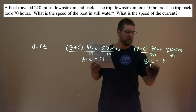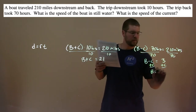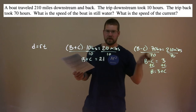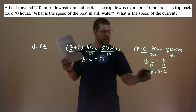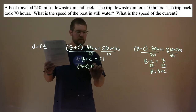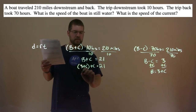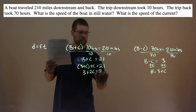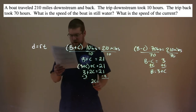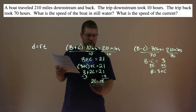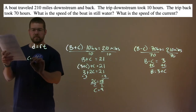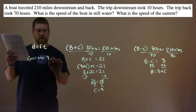B plus C is 21, and B minus C is 3 — makes it pretty simple. Get B by itself: add C to both sides, and B equals 3 plus C. Take that value for B and plug it in: 3 plus C plus C equals 21. 3 plus 2C equals 21. Subtract 3: 2C equals 18. Divide by 2, and C equals 9. The speed of the current is 9 miles per hour.